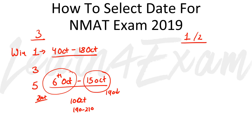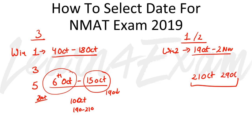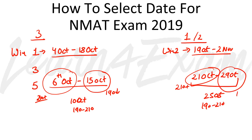If you are planning only 1 or 2 attempts, you can go for Window 2 as well. Window 2 starts from 19th October and goes till 2nd November. The best date within this window would be somewhere around 21st October, and I would say 29th October is the maximum. If your mock score is 210-plus, aim for around 25th October; if it's between 190 and 210, around 25th October as well; and if it's below 190, around 29th October. These mocks are available on the website and you can download them.